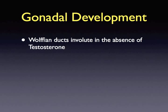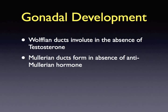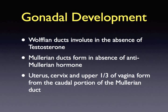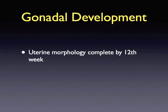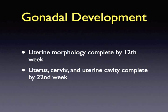Absence of testosterone leads to the involution of the Wolffian ducts. The absence of anti-Müllerian hormone allows for the development of the Müllerian ducts. The caudal portion of the Müllerian duct leads to the formation of the uterus, cervix, and the upper one-third of the vagina. By the twelfth week of gestation, the uterus assumes its mature morphological shape, and by the twenty-second week of gestation, the entire process is complete, resulting in the uterus, cervix, and uterine cavity.